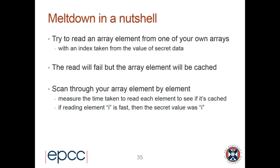Because my document three came back quickly, I know the secret value of the safe — which I wasn't supposed to be able to read — was three. Meltdown in a nutshell: you try to read an array element from your own array using an index taken from secret data. The read will fail eventually, but it's partially completed, so the array element will be cached. You scan through your array element by element, measure the time to read each, and if reading element i is fast, the secret value was i.